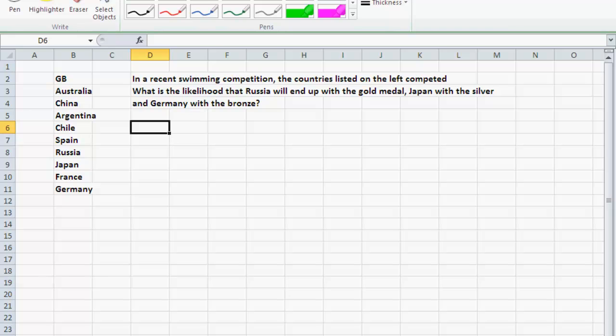What is the likelihood that Russia will end up with the gold medal, Japan with the silver, and Germany with the bronze? Clearly, the order matters here. Even if Russia, Japan, and Germany were to win, if Russia ended up with the bronze and Japan with the gold, that's not the same as what we are looking at. So order matters.